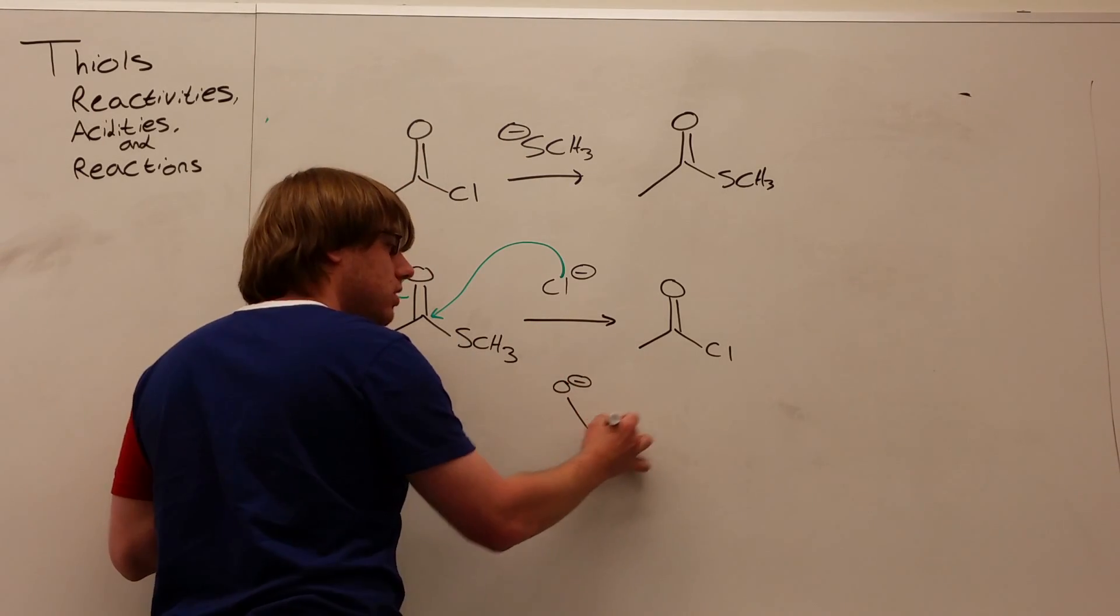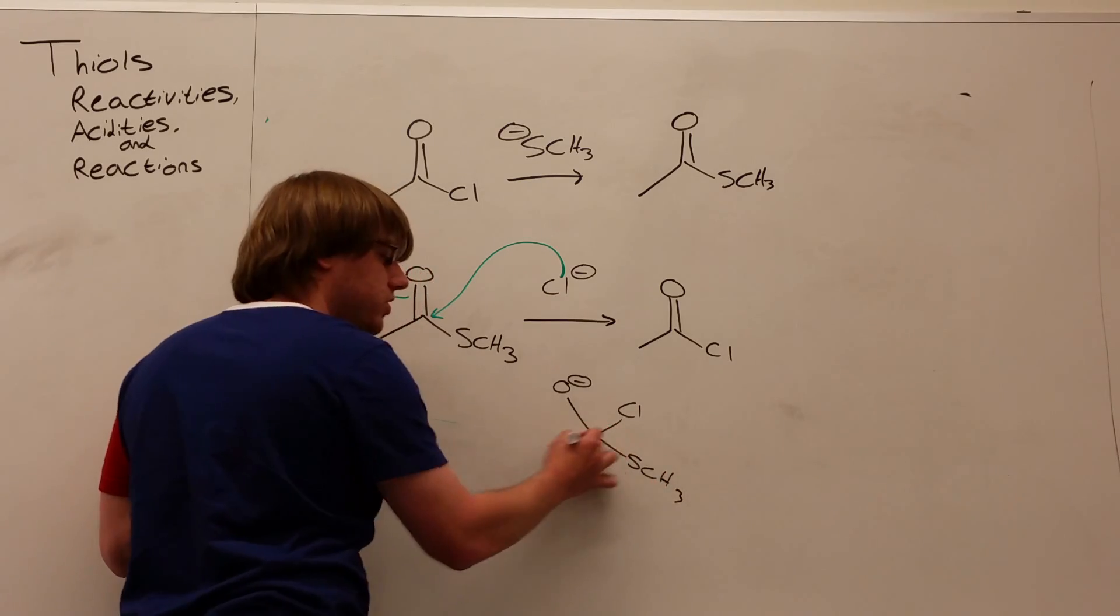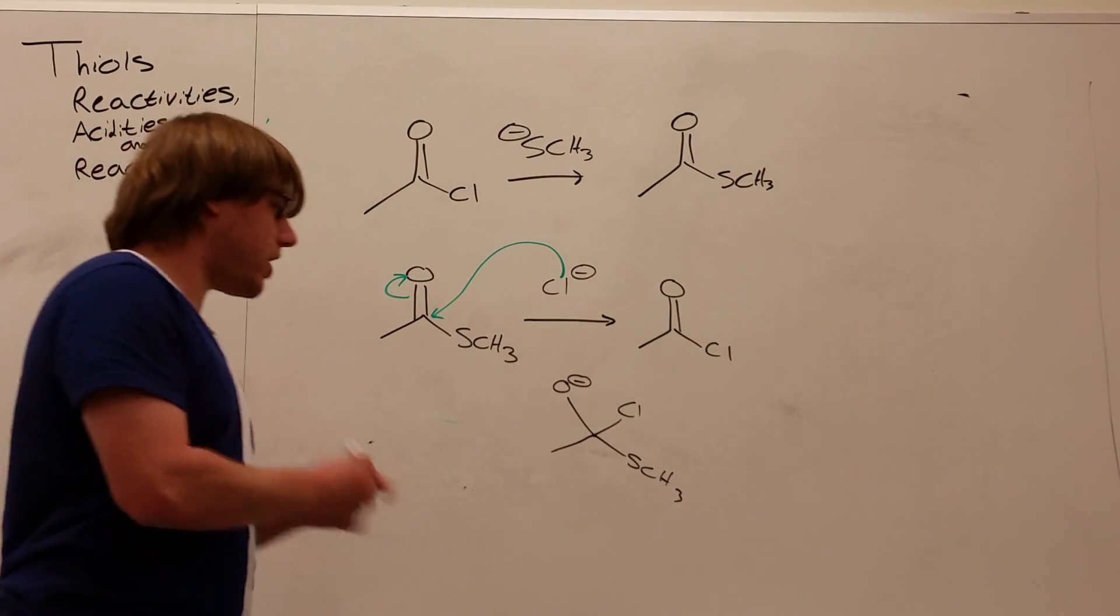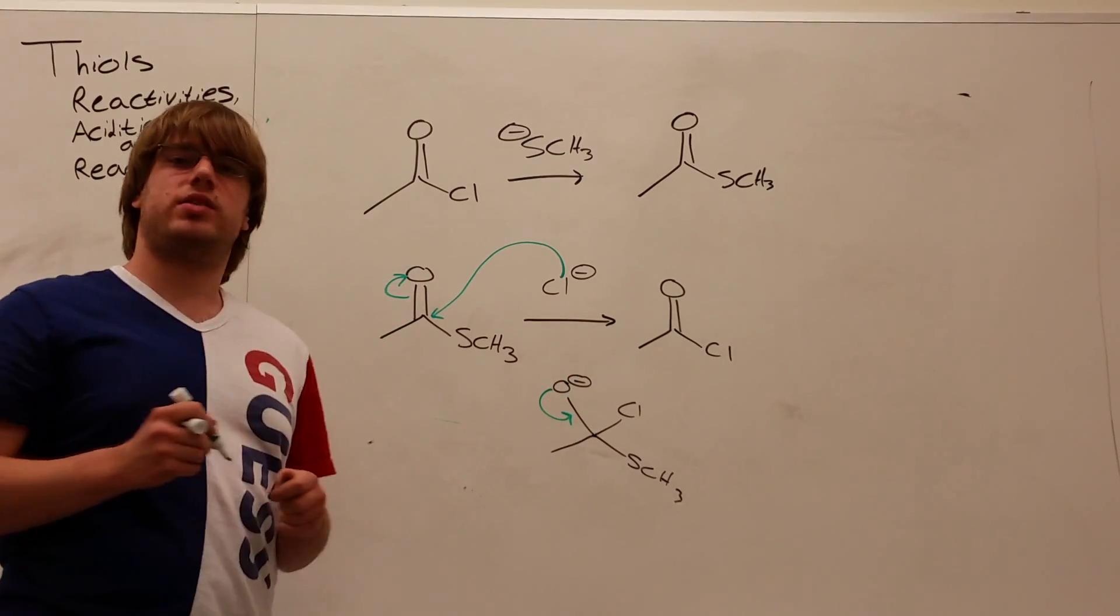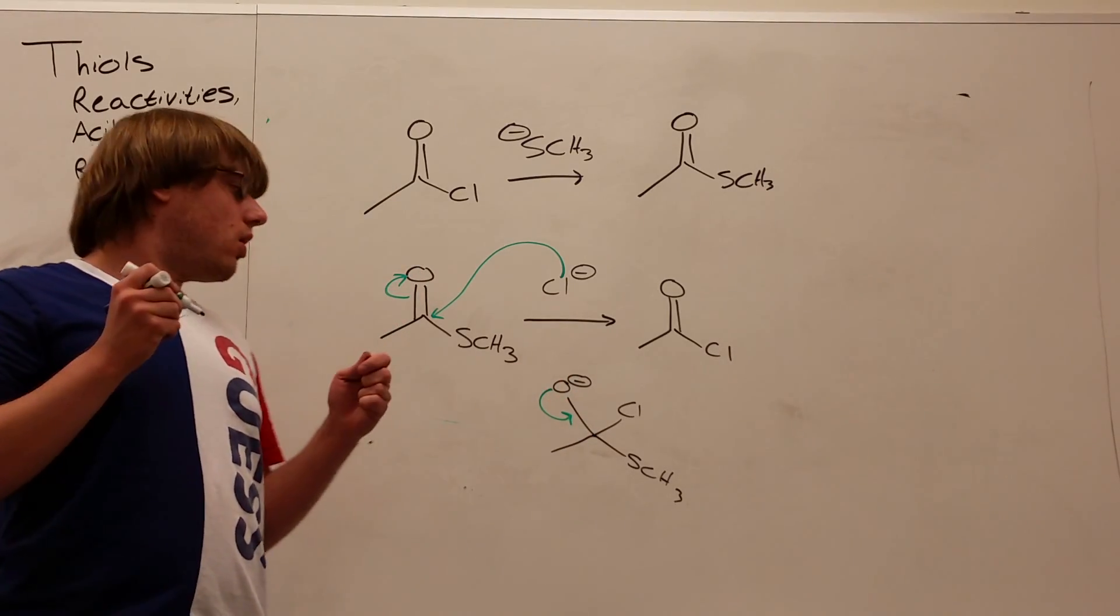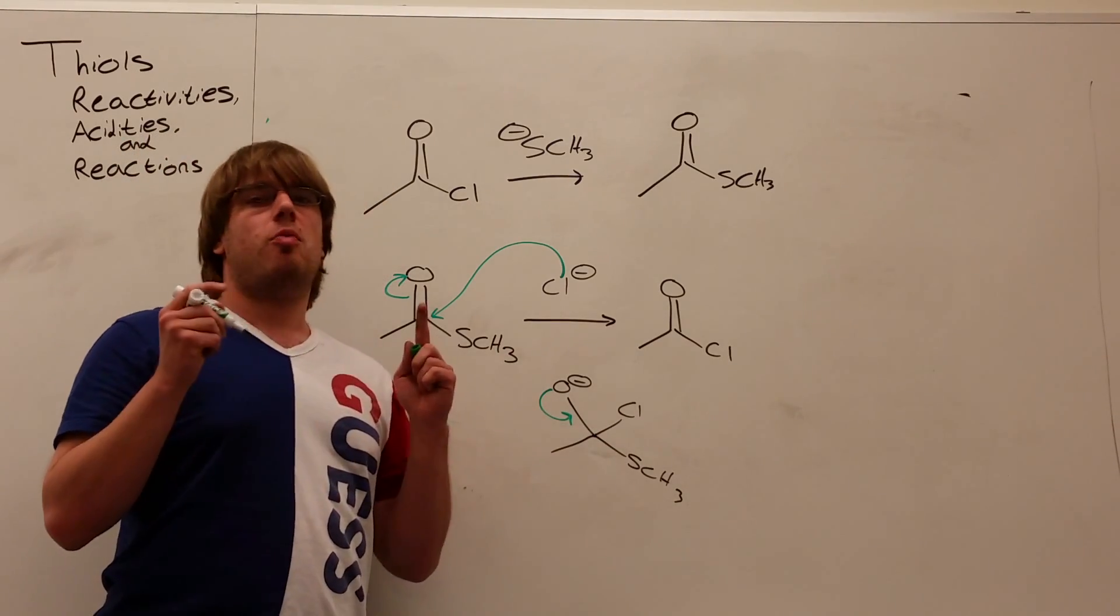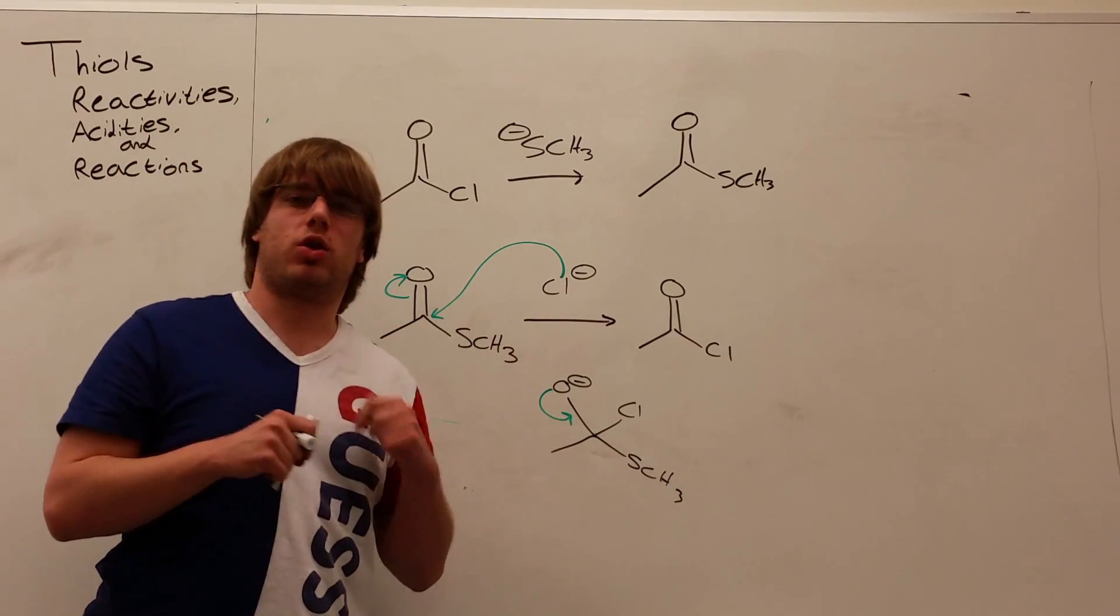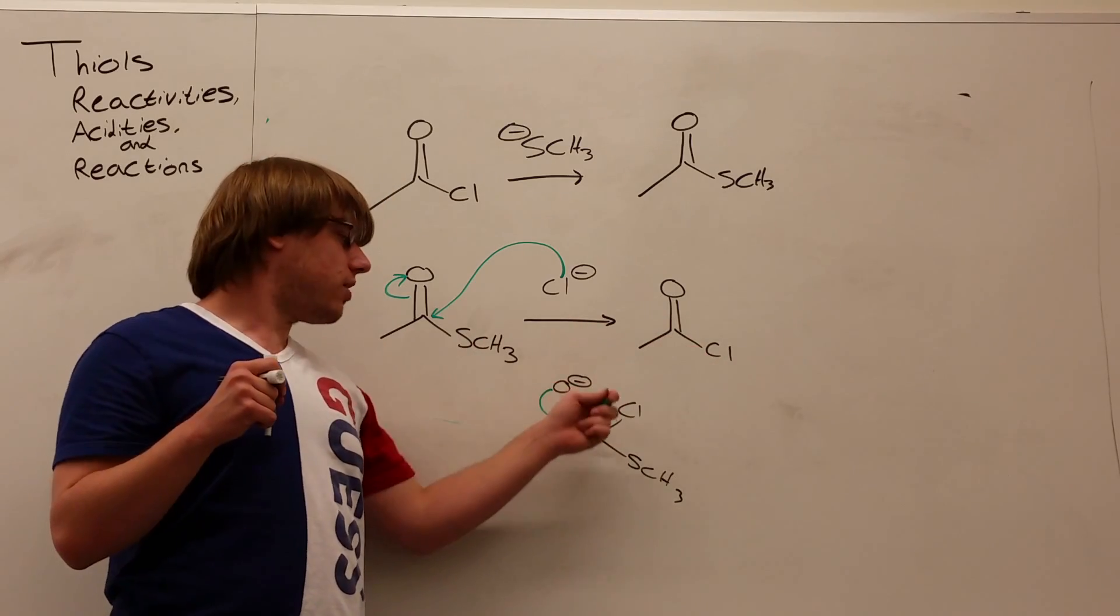And as usual, that O minus is going to resonate down, and something's going to get kicked out. Now, if we want to get to this product, it would make sense that we kick out the SCH3. But this is a question of, will this reaction work? Will this get us to this final product? And if we think about it, who is the better leaving group here between chlorine and sulfur?